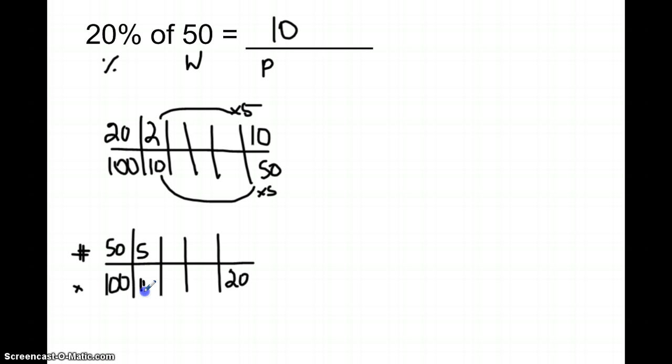And very easily from here they can say, well 10 times 2 or doubling makes 20, 5 times 2 makes 10. Same answer.